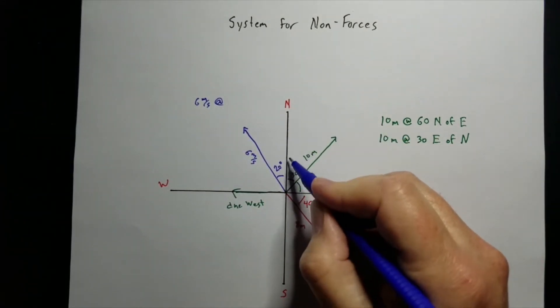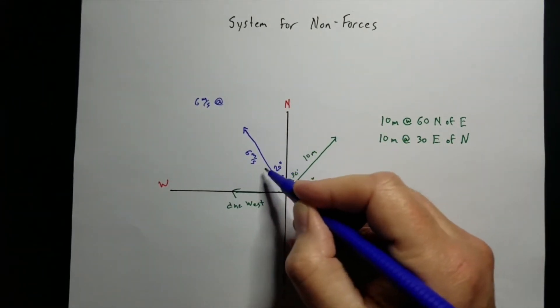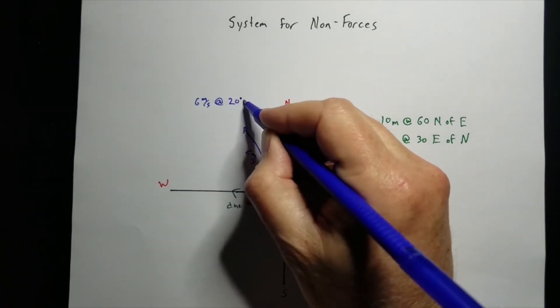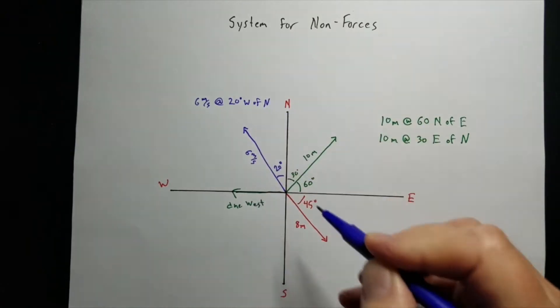And again, we're starting off in north line, and we're going west this time, 20 degrees. So it'll be 20 degrees west of the north line.